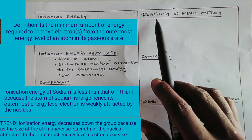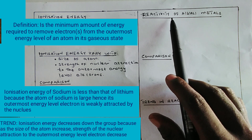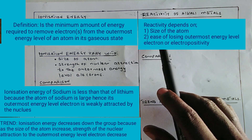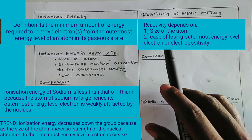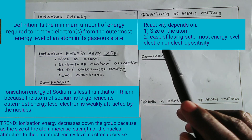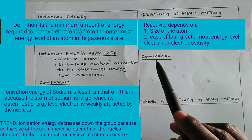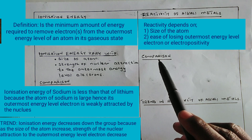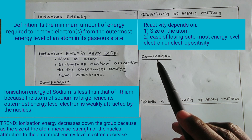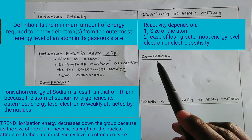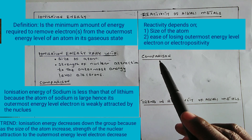The next property is reactivity of alkali metals, which will help us discuss the chemical properties of alkali metals. Reactivity depends on the size of the atom and the ease of losing the outermost energy level electrons. When the atom is smaller, the outermost electron is not easily lost because it is strongly attracted by the nucleus — you can also say the atom is less electropositive. When the atom is larger, the outermost electron is weakly attracted by the nucleus and is easily lost, so it becomes more reactive.